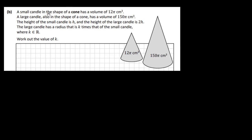For the second part, a small candle in the shape of a cone has volume 12π cm³. A large candle also in the shape of a cone has volume 150π cm³. The height of the small candle is h, and the height of the large candle is 2h. The large candle has radius k times that of the small candle, where k is real. We need to find k. So we have two cones: the small one has radius r and height h, and the large one has radius kr and height 2h.